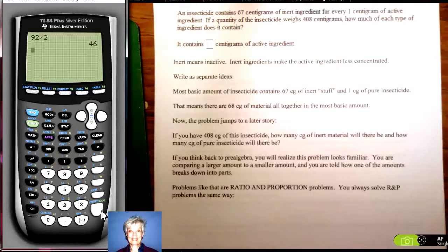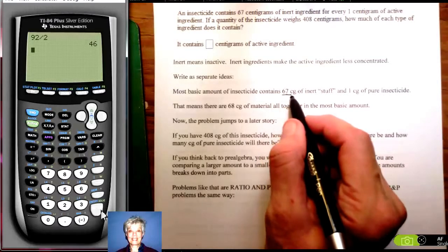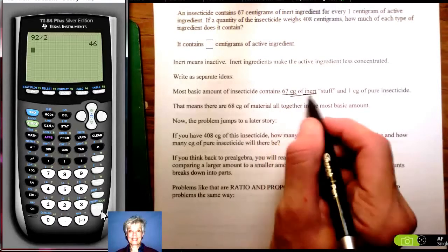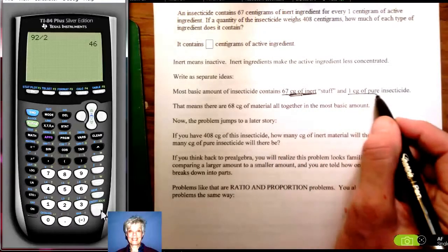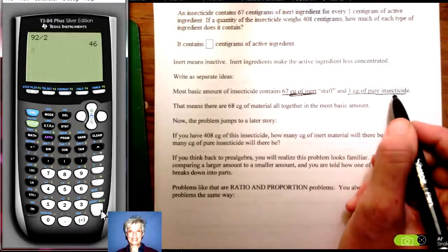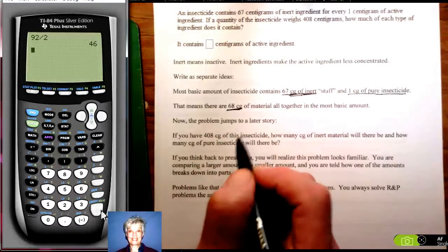So insecticide contains 67 centigrams of inert ingredients for every one centigram of active ingredient. That is the stuff that actually kills the insects. So you've got 67 centigrams of inert material right there. You've got one centigram of insecticide so altogether you've got 68 centigrams.